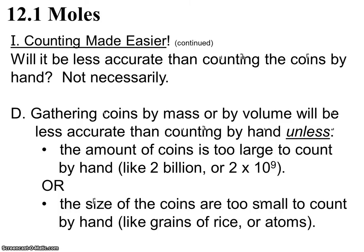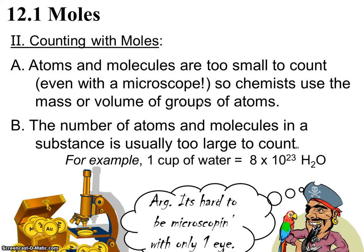When you are gathering coins or any kind of item by mass or by volume, it might be less accurate unless the amount of coins you have to count is too large to really count by hand, like it would take forever, or you'd fall asleep halfway and lose count. Like if you were counting out 2 billion coins, that would take too long. Or what if the size of the coins you had to count out was too small to count by hand. Like if you had to count out grains of rice or atoms or moles or molecules.